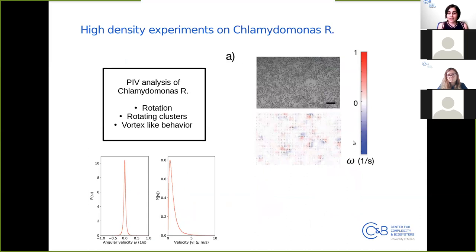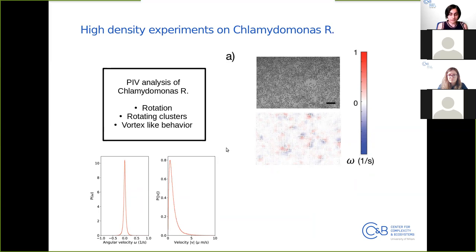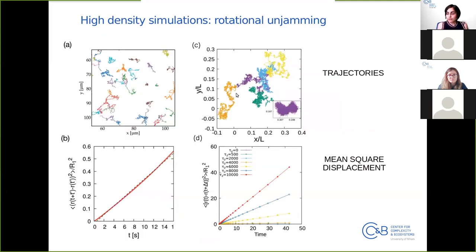Returning to our natural rotators, we perform an experiment with Chlamydomonas reinhardtii at high density. From particle image velocimetry we reconstruct a map of angular velocity. We observe that the algae rotate at the single-particle level, and they form clusters of rotating algae with vortex-like behavior, in which algae rotate in opposite directions. Comparing the shape of the velocity distributions, they are similar to what we obtained from our model — again, the shape of the angular velocity distribution matches.